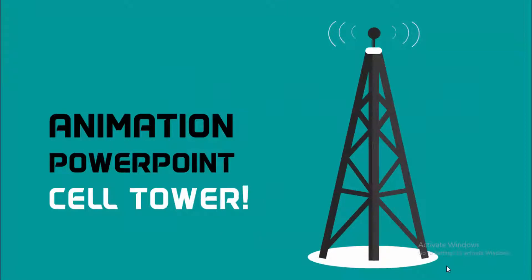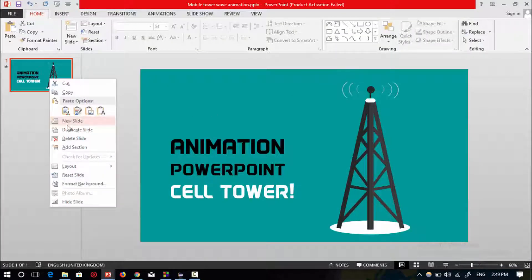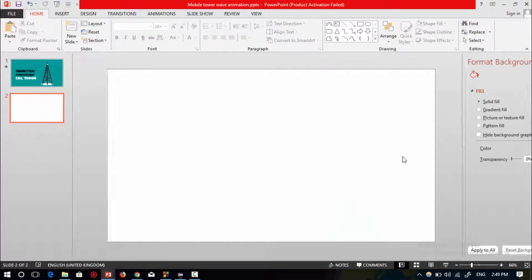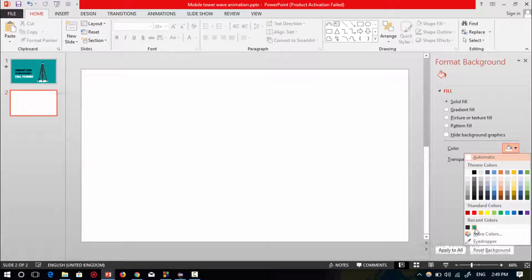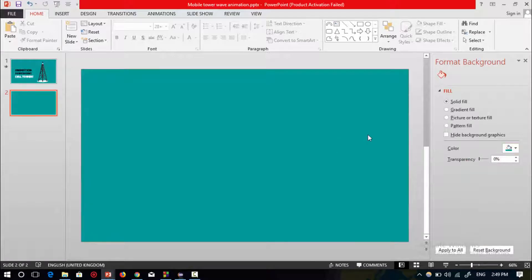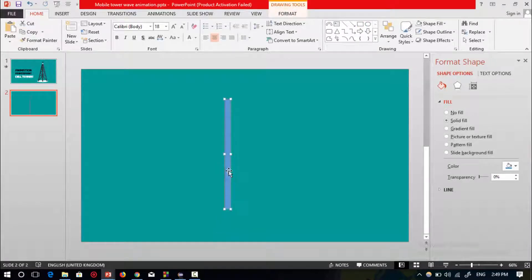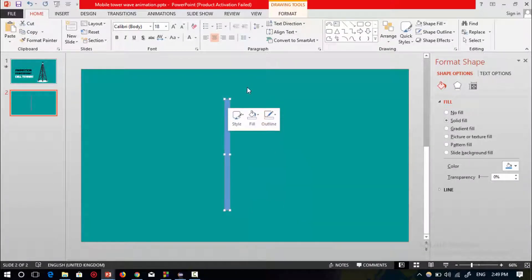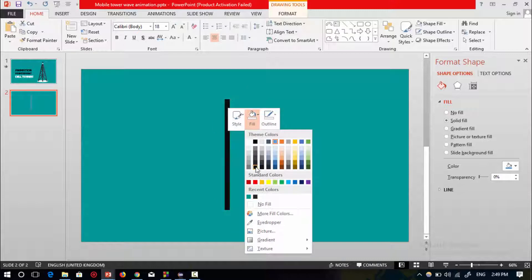In this tutorial I'm going to show you how to design a cell tower and its animation. First, select a new slide, delete all the text boxes, go to Format Background and change the background color. Then select a rectangular shape, place it and reset its size, then set no outline and fill the shape with the chosen color.